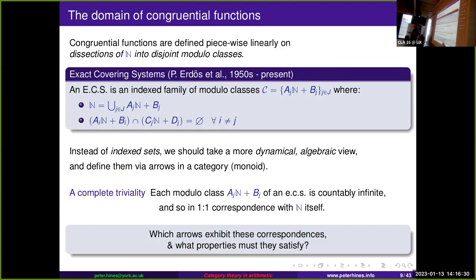The answer has to be yes, or the talk finishes now. To get there we need to do some elementary number theory and look at the domains of congruential functions — the notion of taking the natural numbers and splitting them up into distinct modulo classes. This gives what Erdős called exact covering systems: a collection of modulo classes whose union is all the natural numbers and which are pairwise disjoint.